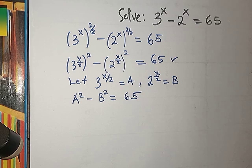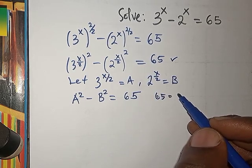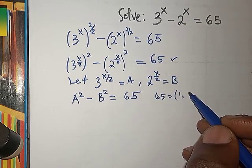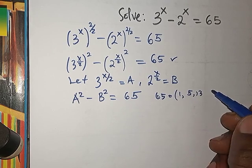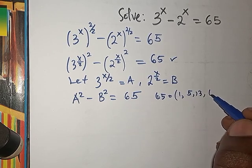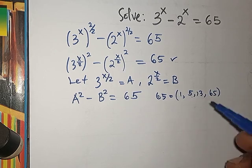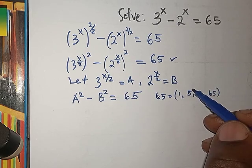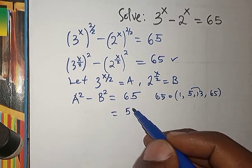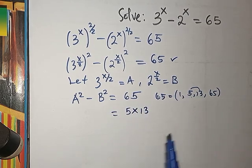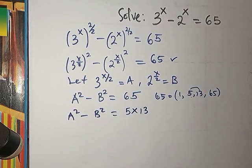Now we factor 65. The factors of 65 are 1, 5, 13, and 65. The useful factor pair here is 5 times 13, which equals 65. So we have A squared minus B squared equal to 5 times 13.